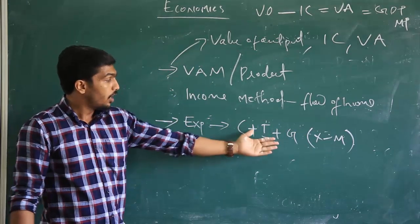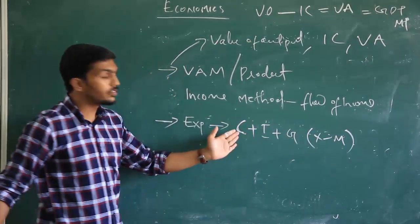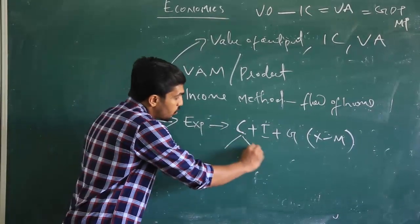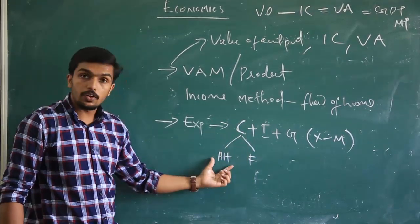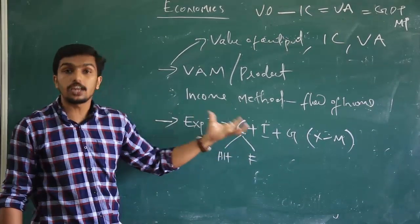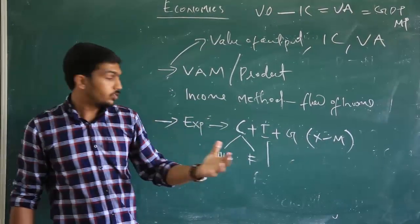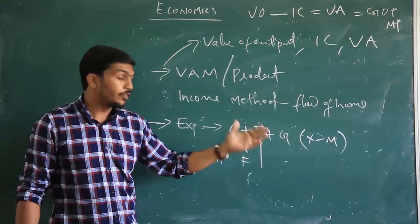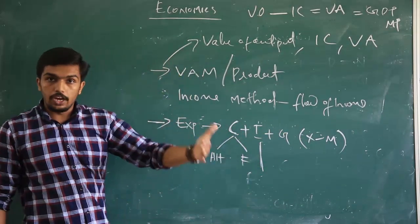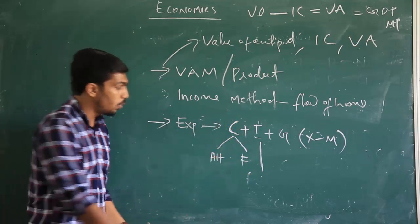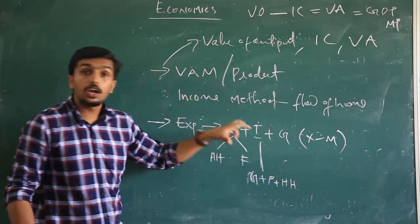C means consumption, I is investment, G is government expenditure, and X minus M is the net export side. Consumption expenditure means the aggregate consumption expenditure of an economy, including the consumption expenditure of households and firms. Investment expenditure is an aggregate concern — government, household, and firms all invest money. To find total investment, we identify the investment of government, investment of firms, and investment of household sector, which together give the total aggregate investment expenditure.